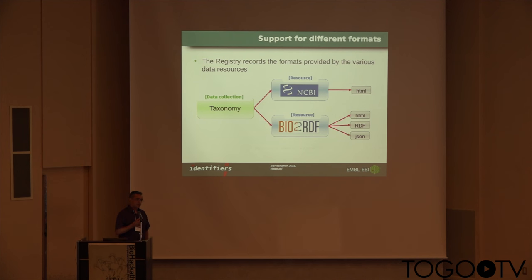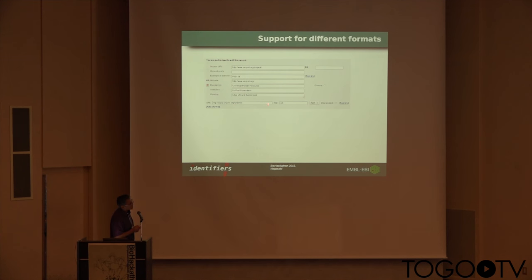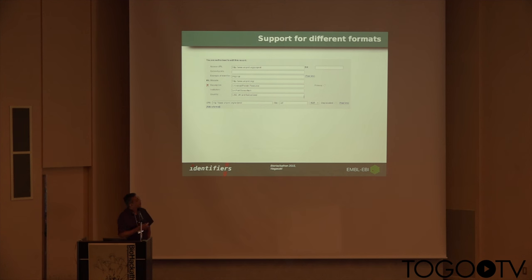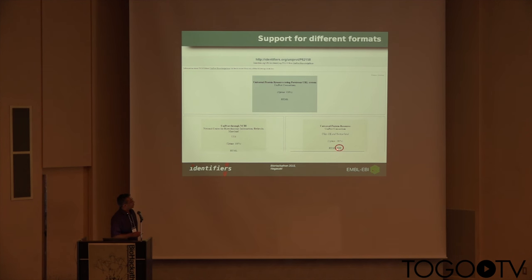One of the other things we thought our users would want is information about the different kinds of formats that the resources provide. For example, NCBI may only provide HTML records, while bio2RDF might give you links to HTML, RDF, and JSON. We want to record that so that people can, for example by content negotiation, go to the most appropriate format they want. This is in development at the moment. Last year we changed the data model so we could capture that information. We've put a curation interface — this is the UniProt mock-up version in development — where we can record the URI to access the RDF, and there's a button to register different formats. Once deployed, an additional format will appear for that resource provider, and that would also be reflected in the info domain with an extra clickable button.